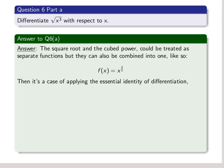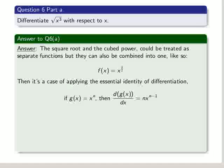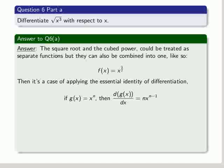Then it's a case of applying the essential identity of differentiation, which should be known by heart, which is that if g of x equals x to the power of n, then to differentiate it with respect to x, we multiply the one term by its power and then subtract 1 from the power to get n times x to the power of n minus 1.